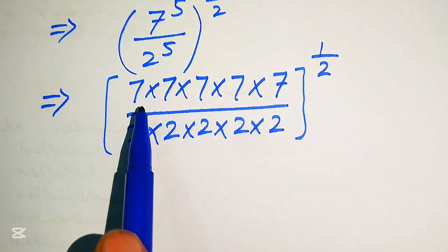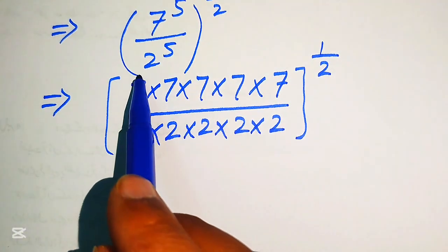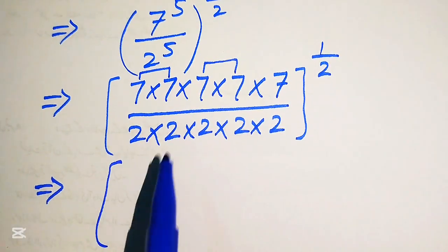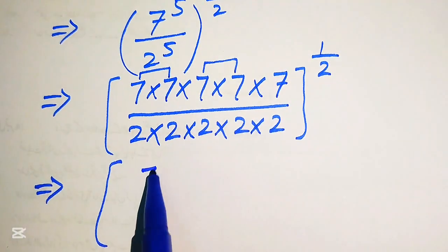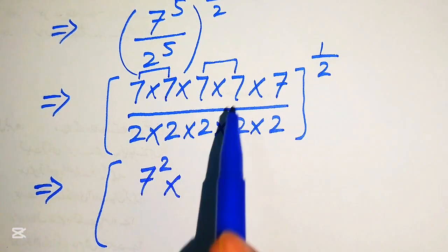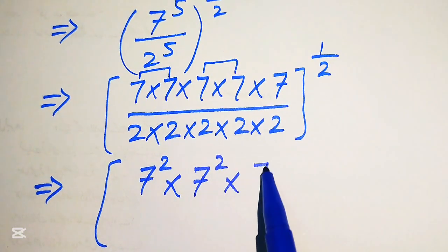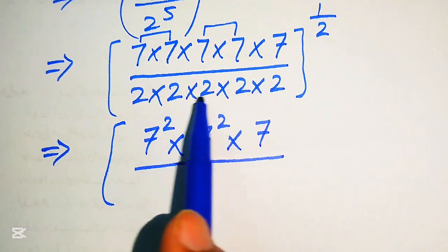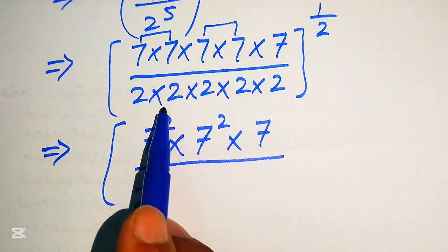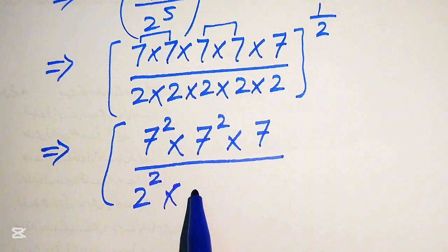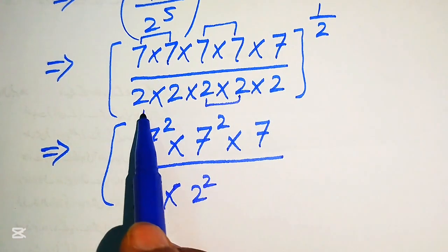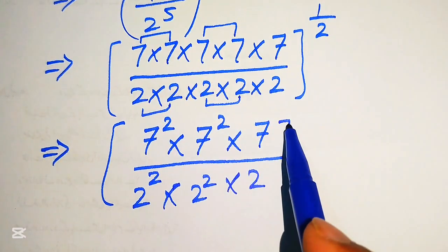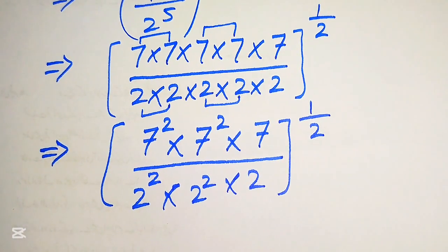Now we make pairs of these terms. We have 7 × 7 = 7 squared, and another 7 × 7 = 7 squared, with one 7 remaining. Similarly for the denominator, we write it in index notation: 2 squared × 2 squared, with one 2 remaining, all to the power of 1 over 2.